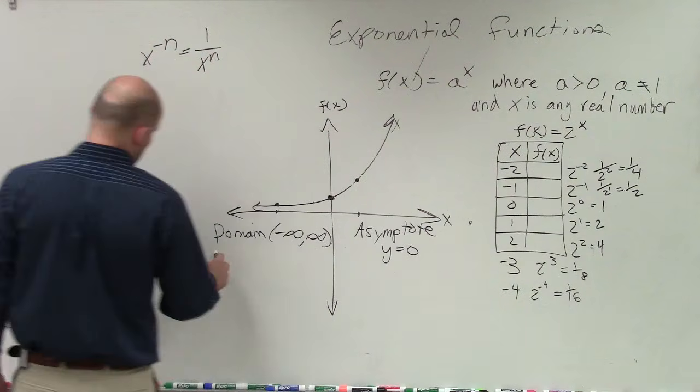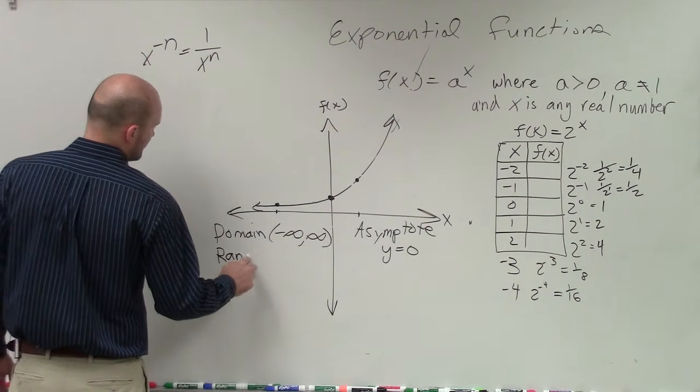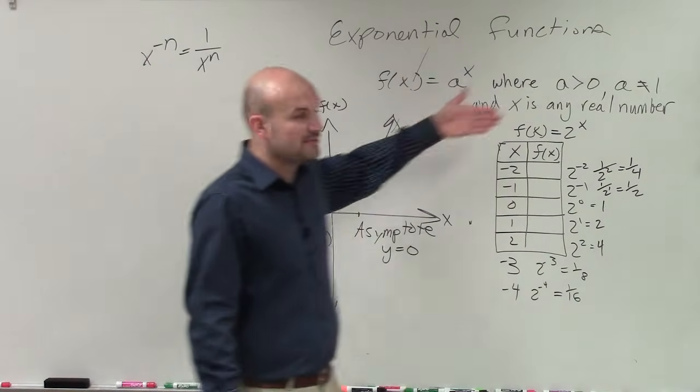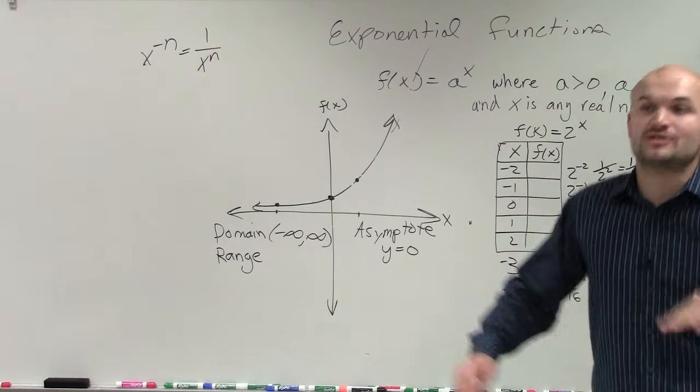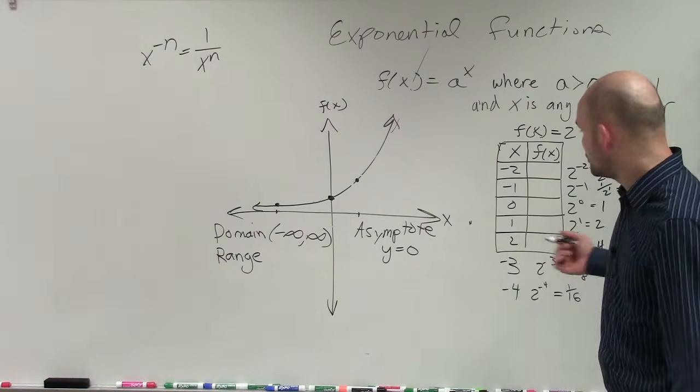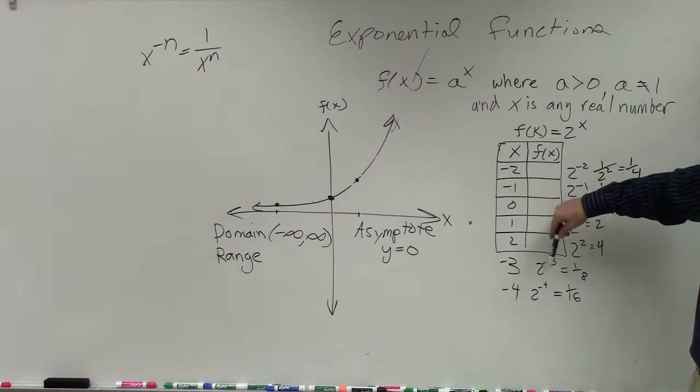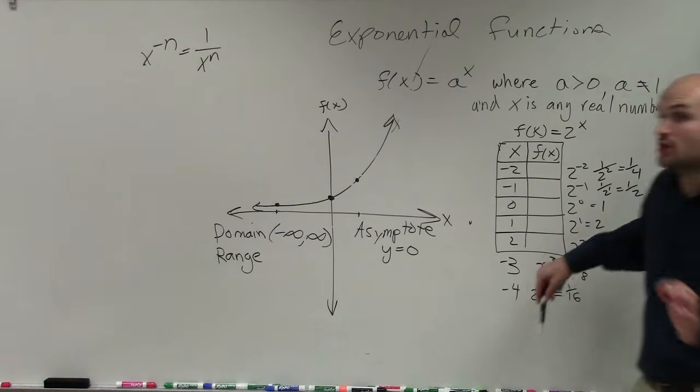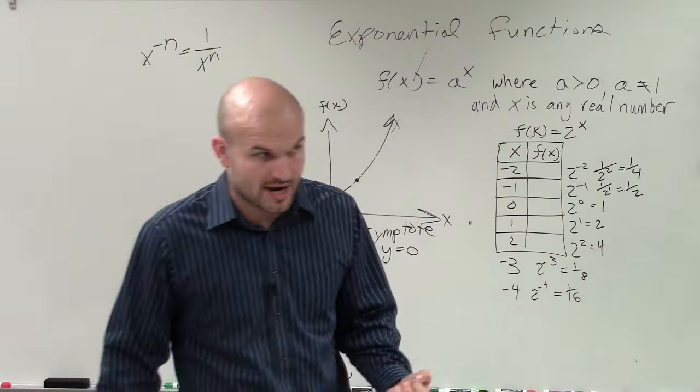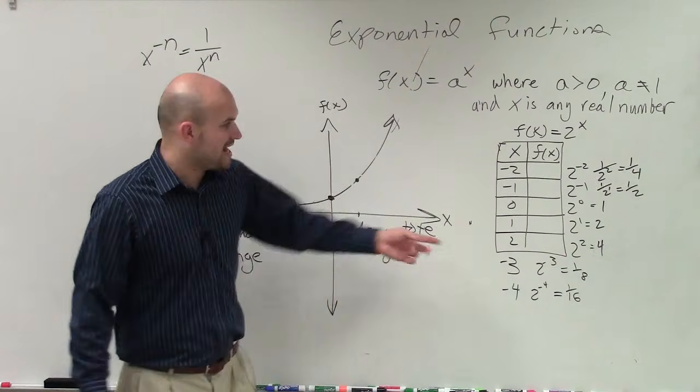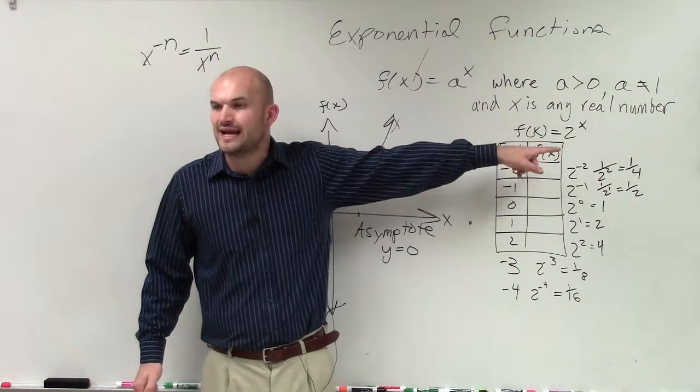But let's talk about the range. The range, remember, is the output. So whatever number you plug in for x, are you able to get any possible number? Now I showed you guys, when you keep on getting larger, you're just going to keep on getting higher and higher numbers. And when you get to smaller numbers, negatives, you keep on getting smaller and smaller numbers, but you're never going to get to 0, right?